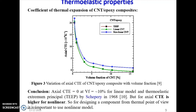Now, thermoelastic properties. We discussed about the effect of the coefficient of thermal expansion. This is one recent paper published in 2018. They have shown the variation of axial coefficient of thermal expansion with volume fraction. At volume fraction of nearly 10%, it is shown that the axial coefficient of thermal expansion is nearly zero, which indicates that by adding only 10% carbon nanotube in epoxy, we can achieve our desired property — coefficient of thermal expansion nearly zero — which means if there is a change in temperature, the change in length is negligible.